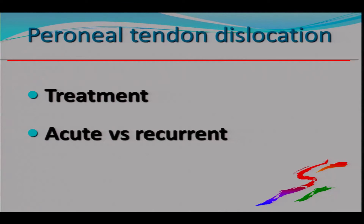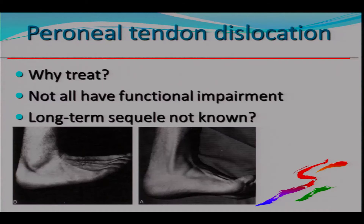There are two different ways of treating this depending on whether we're talking about acute or recurrent peroneal tendon dislocation. Recurrent dislocation will never recover with rehab. If it's symptomatic, it needs surgery — always. If it's not symptomatic, you can leave it. Acute can be debated: it can be operated or left for non-surgical treatment. There is definitely a lack of good level one or level two randomized studies.